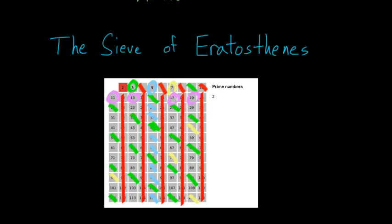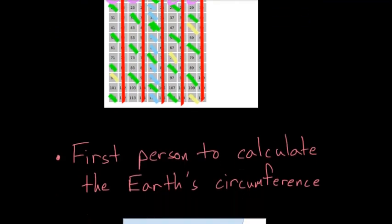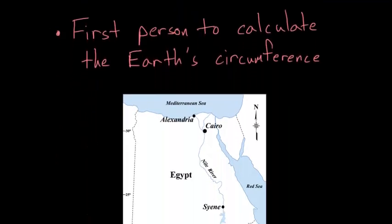Now like I said, besides the sieve of Eratosthenes, his greatest achievement would be his calculation of the circumference of Earth. So let's move on to that in the next video. We'll see you next time.